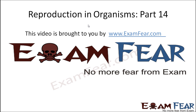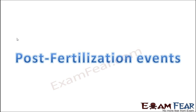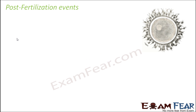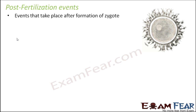This video on reproduction in organisms part 14 is brought to you by examfear.com. Now the last set of events — the post-fertilization events. Fusion has happened and the zygote is formed. What will happen after that? The set of events that take place after the formation of the zygote — because zygote formation was the result of fertilization. Zygote is formed, but zygote is not the new offspring. So what will happen to this zygote so that it develops into a new individual?